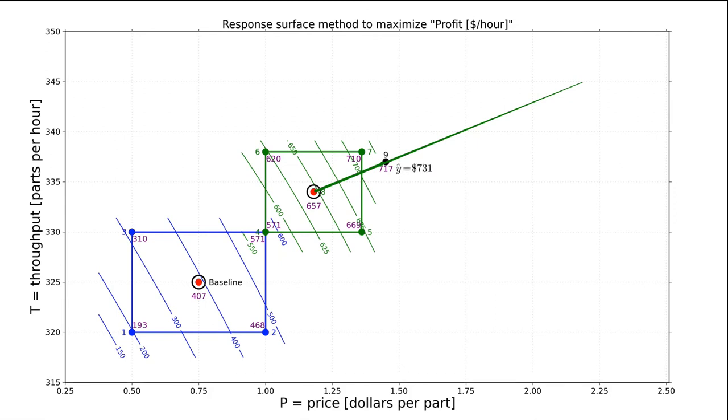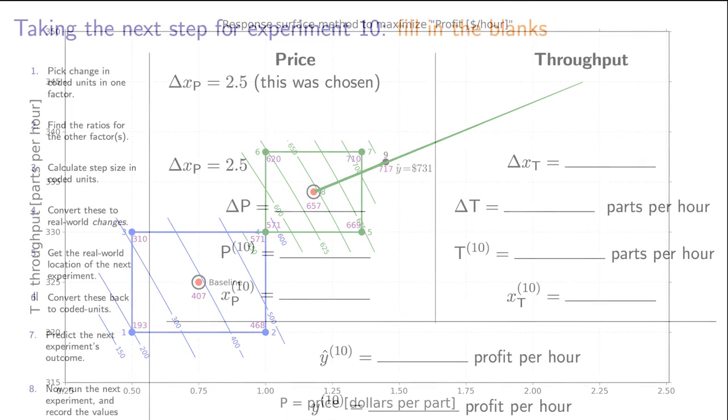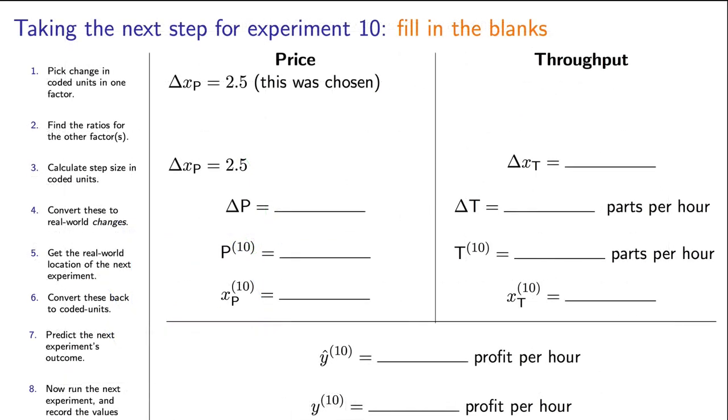Now we can try step to delta xp equals 2.5 away from the baseline. Pause the video and try to calculate these quantities at this new 10th experiment yourself. You'll soon become an expert at these calculations, but it will take you several minutes at first. Once you're done with your work, go compare your prediction to the actual experiments using the website.